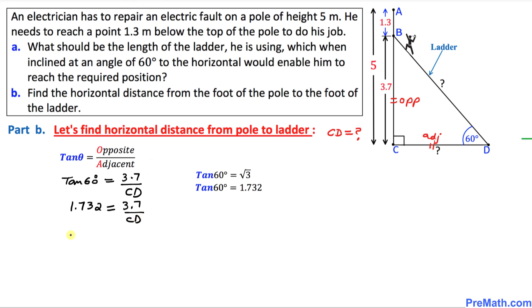I am going to put a 1 underneath this number, and now I am going to solve for CD. I am going to cross-multiply these numbers. That is going to become 1.732 times CD equal to 1 times 3.7, which is 3.7. Let's go ahead and isolate CD.